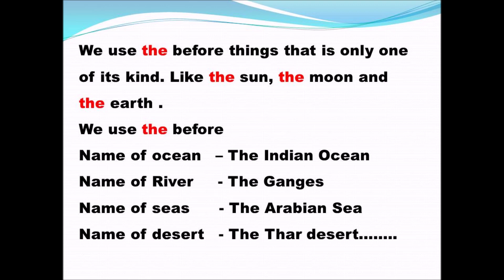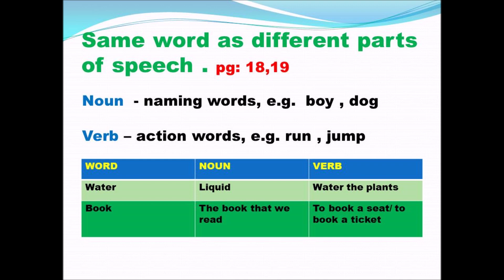Are you all clear about definite articles and indefinite articles? Before using the articles a, an, and the, read the sentence carefully, understand it, and then use the article. Now we are moving on to the next topic: same word as different parts of speech. What are parts of speech? Here we are using noun and verb. A noun is a naming word — it can be the name of a person, place, thing, or animal. A verb is an action word — for example, run and jump are actions performed by a person.